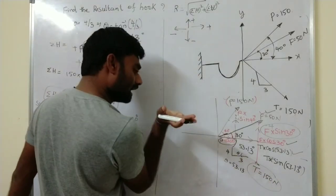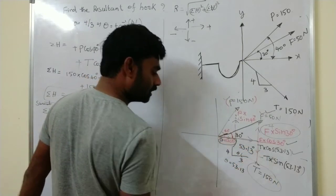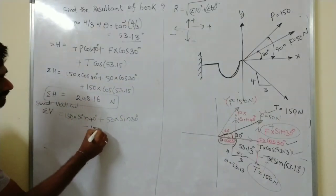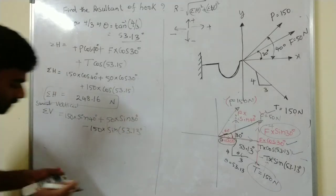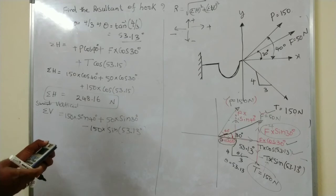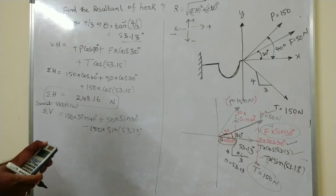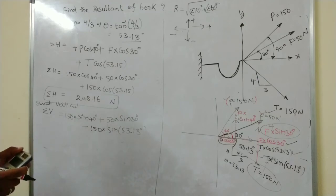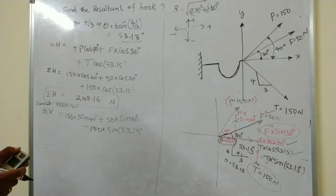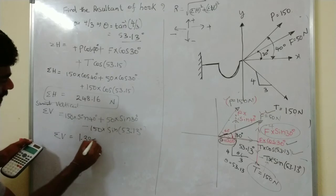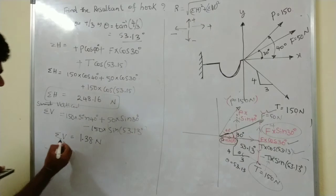Force T acts in the right and downward direction, so it is negative: −150 sin 53.13°. Therefore ΣV = 150 sin 40° + 50 sin 30° − 150 sin 53.13°. The answer is 1.38 Newtons. This is the ΣV value.